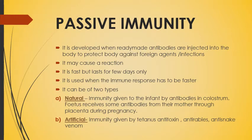Next is passive immunity. It is developed when ready-made antibodies are injected into the body to protect the body against foreign agents or infections. If our body has a pathogen or foreign agents or infection that we need to protect against immediately, ready-made antibodies are injected. For example, if you are bitten by a dog or a snake, we must act immediately, so we use anti-snake venom or anti-rabies injection. That particular injection contains ready-made antibodies.